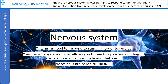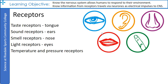Next up, an overview of the nervous system. Organisms need to respond to stimuli in order to survive. A single-celled organism can just respond to its environment, but the cells of a multicellular organism need to communicate with each other first. So as multicellular organisms evolved, they developed nervous and hormonal communication systems. Your nervous system is what allows you to react to your surroundings and coordinate your behavior. It's made up of all the neurons — nerve cells — in your body.